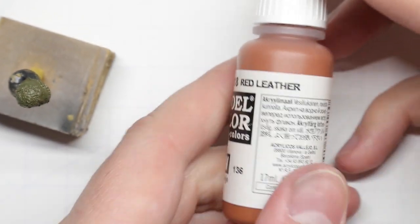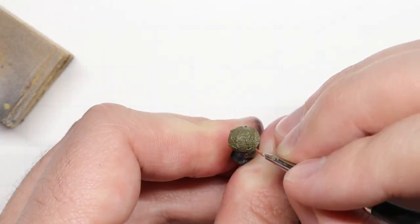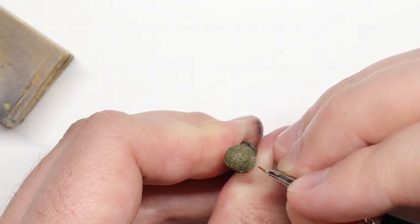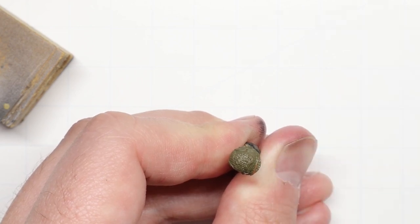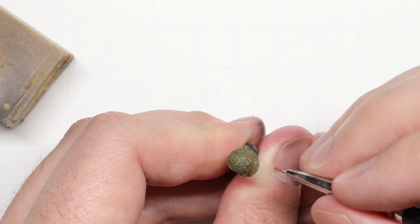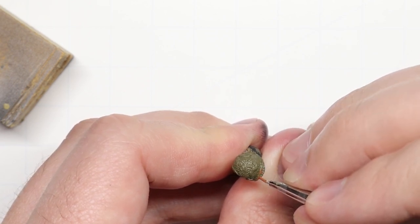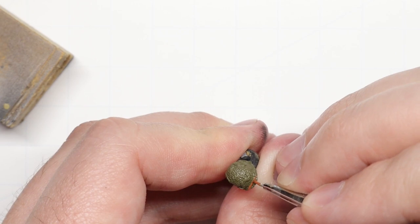For our helmet straps, I like to use red leather. It stands out really great against all of our greens and drabs and khakis, and it works perfectly for this. We're going to very carefully paint those straps in along the front and back of the helmet.